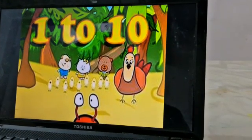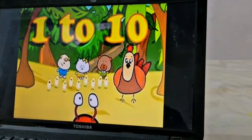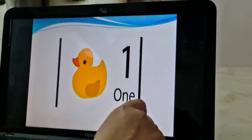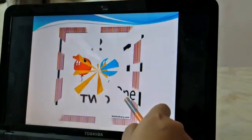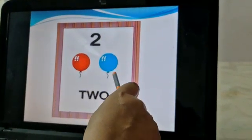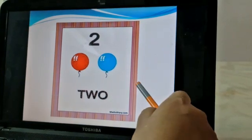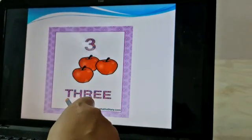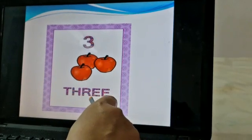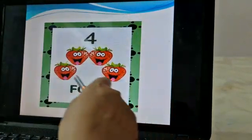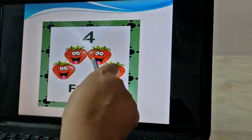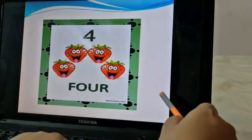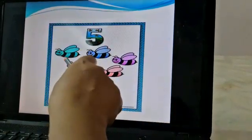One, O-N-E, one. One. Two, T-W-O, two. One, two. Three, T-H-R-E-E, three. One, two, three. Four, F-O-U-R, four. One, two, three, four.